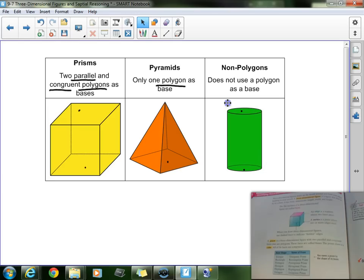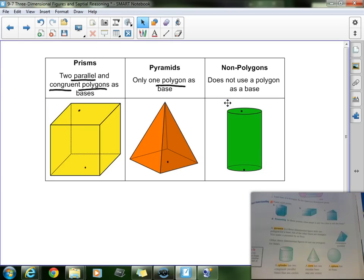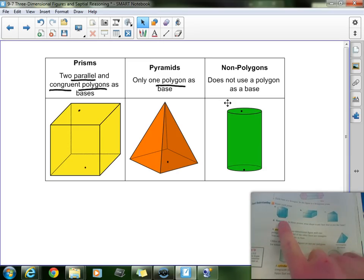Let's go ahead and practice naming some of these shapes. On page 463 here, you see some examples. This first shape right here, I see a pentagon as its base. It has two parallel pentagons, so we're going to call that a pentagonal prism. Right here, I see rectangles all the way around, so that's going to be a rectangular prism. And this last one, I see triangles as its base, so that's going to be a triangular prism. Here you have another example of a rectangular prism, and these are some examples of non-polygonal three-dimensional figures that do not use a polygon.